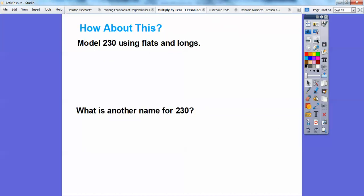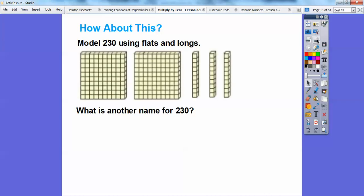So how about this? Model 230 using the flats and the longs. Do you remember doing that? So 230, there would be 2 flats and 3 longs right there. Remember, a flat is 100. Here's another 100. And then here's 3 longs right here. So what is another name for 230? We can call it 2 hundreds and 3 tens, or 23 tens. Remember doing that?